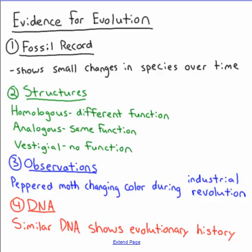Now let's go over some of the evidence for evolution. Evolution is called a theory, and some people don't understand how we use the word 'theory' in science. A theory is a very well-tested and well-supported idea, so evolution is backed up with a significant amount of evidence.